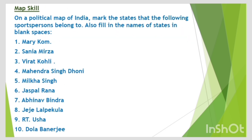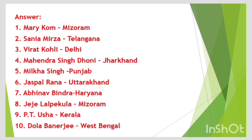Next is map skill. On a political map of India, mark the states that the following sports persons belong to: MC Mary Kom — Mizoram, Sania Mirza — Telangana, Virat Kohli — Delhi, Mahendra Singh Dhoni — Jharkhand, Milkha Singh — Punjab, Jaspal Rana — Uttarakhand, Abhinav Bindra — Haryana, Jeja Lal — Mizoram, P.T. Usha — Kerala, Dola Banerjee — West Bengal.